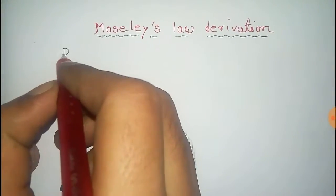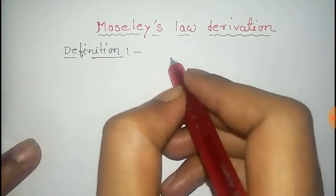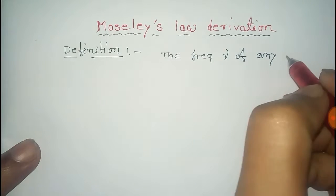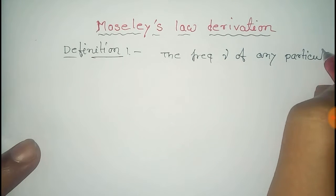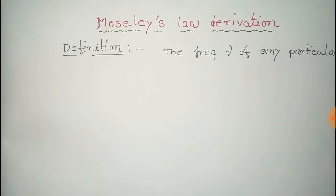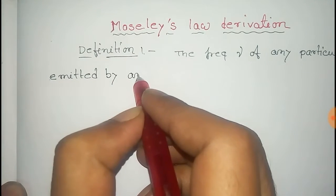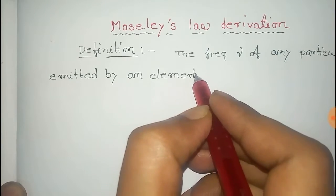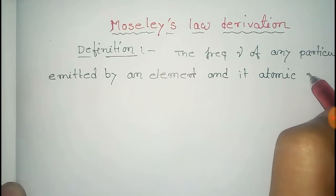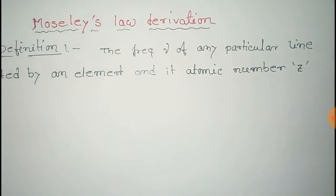In this video we will derive Moseley's Law. The definition of Moseley's Law is that this law relates the frequency with the atomic number. The frequency ν of any particular line emitted by an element with atomic number Z is related by Moseley's equation.